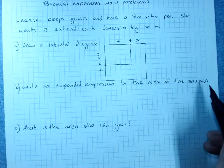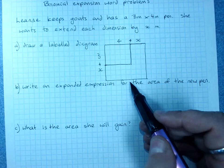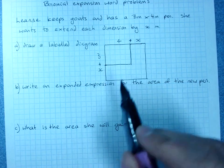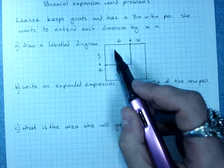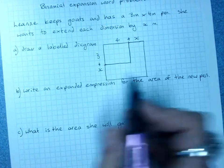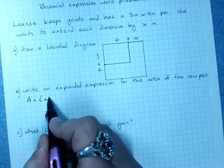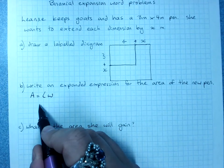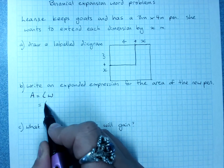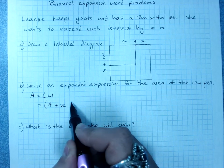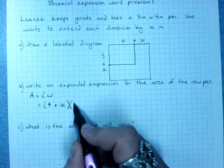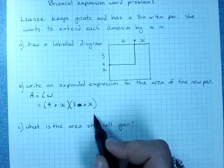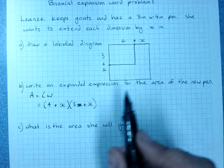Write an expanded expression for the area of the new pen. You start with the binomial product. The area of this pen, in fact it's area so you can start with area equals length times width because there's a formula for area so you use it. The length is four plus x. The width is three plus x and I have to multiply those together. They want an expanded expression.